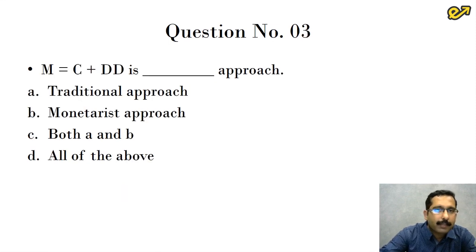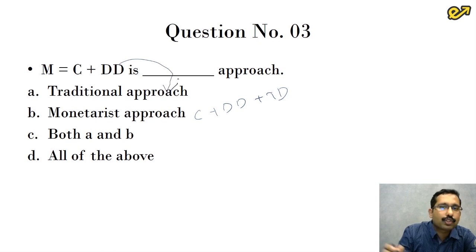Next question is M is equal to C plus DD is dash approach. First option is traditional approach, second option is monetarist approach. Traditional approach is C plus DD. Monetarist approach is C plus DD plus TD. So the answer for this is C plus DD is the traditional approach to measure money.